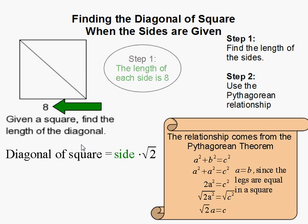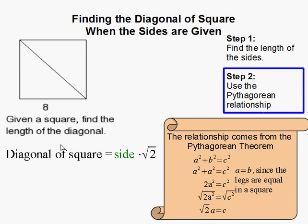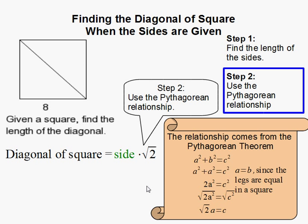Now that we know that, all we have to do is take that 8 and substitute it into the relationship which stems from the Pythagorean Theorem. So I'm going to go ahead and substitute that 8 right here.